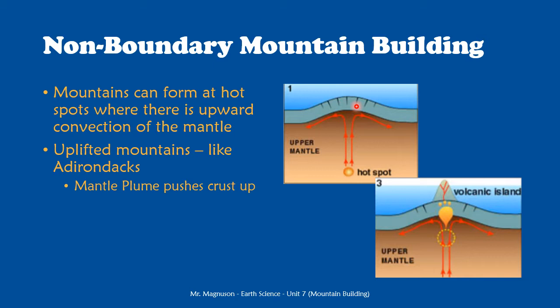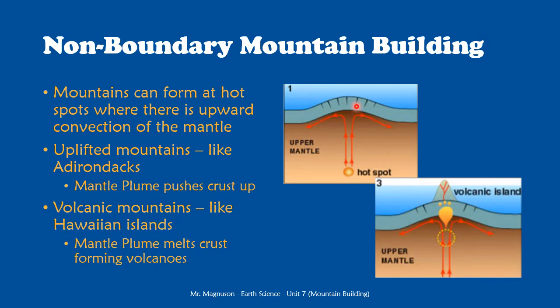The other thing that can happen in the middle of a plate — not at the boundary of a plate — is the formation of volcanic mountains. This occurs where the mantle plume pushes up against the crust, heating it, and we get a little melting of the crust, which is what forms volcanoes. In both cases, the mantle is not punching through the crust. We just have a little bit of the crust melting and forming volcanoes, or the crust stays solid and gets pushed up to form uplifted mountains. These are the two processes of mountain building we see going on in the middle of plates, not at boundaries.